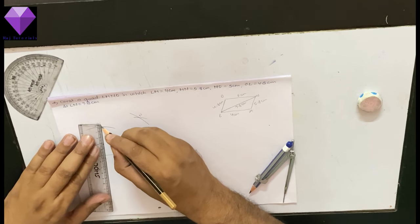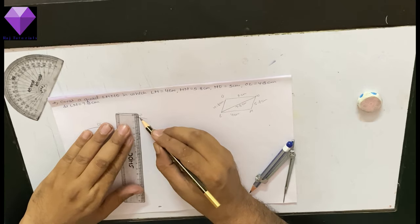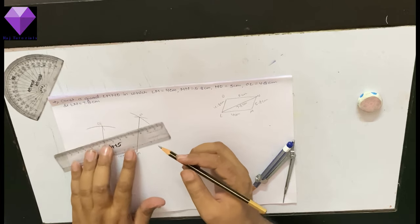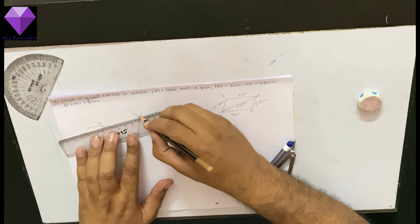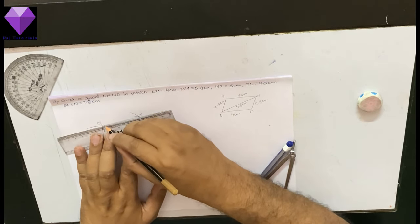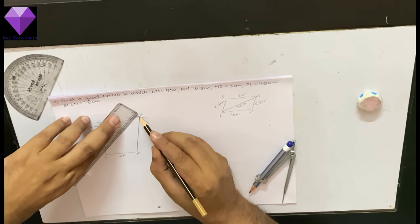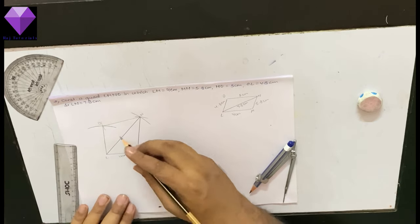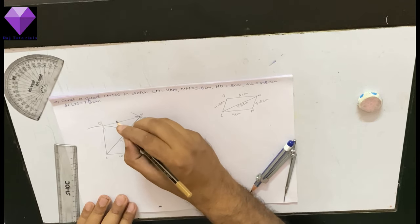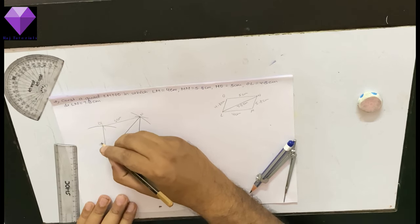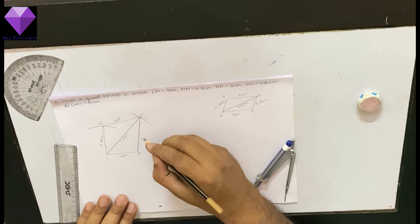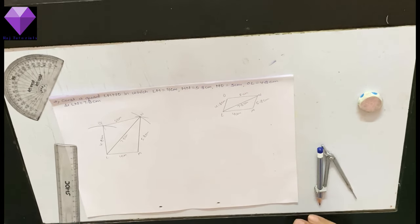Now I am joining all of them. And after joining, I am putting down the values of each thing. So this is my required quadrilateral LMNO. Thank you.